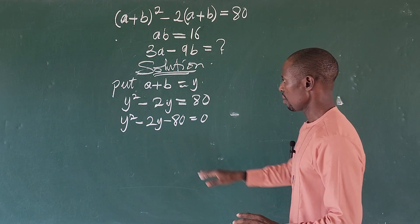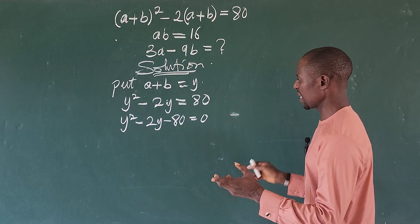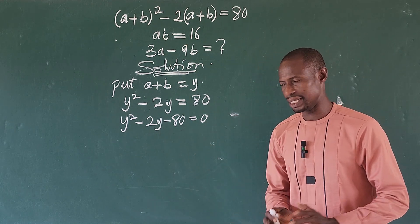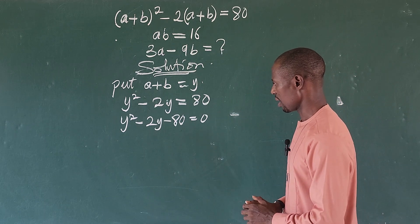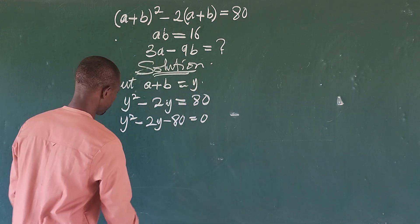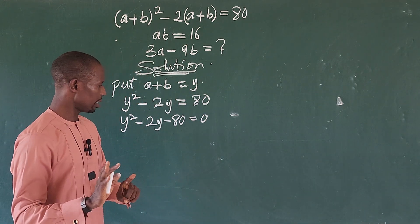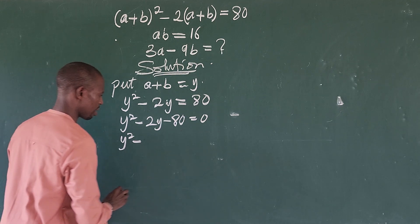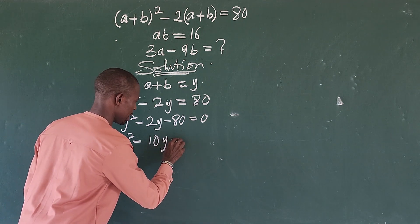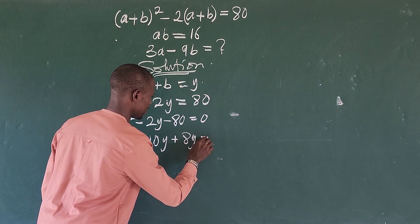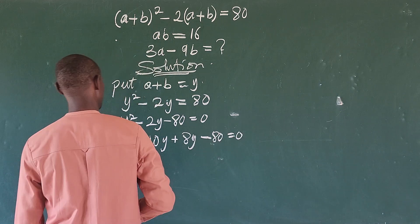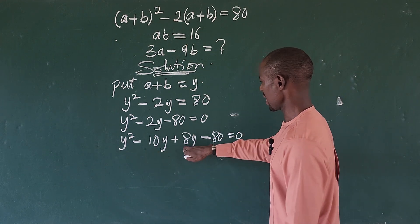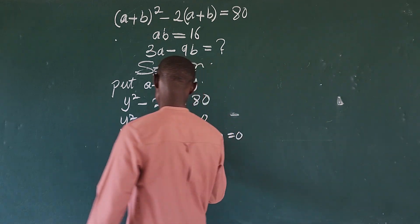To solve by factorization, we find two factors of 80 that multiply to give minus 80 and add to give minus 2. Those numbers are positive 8 and negative 10. We rewrite the middle term: y² minus 10y plus 8y minus 80 equals zero. Minus 10y plus 8y gives minus 2y, and minus 10 times 8 gives minus 80, so we are in order.